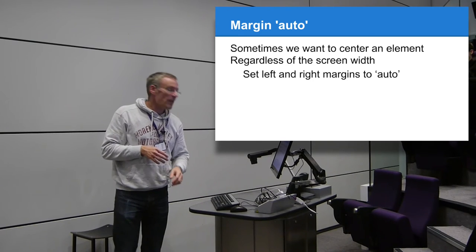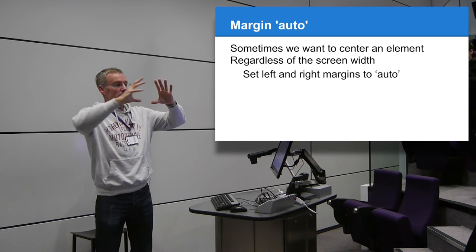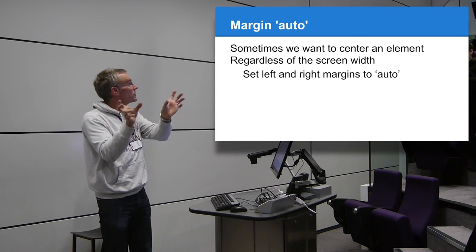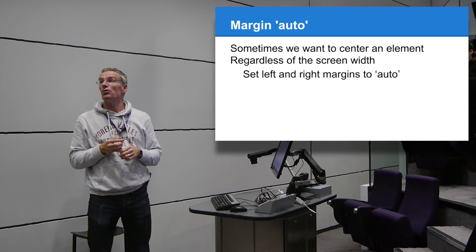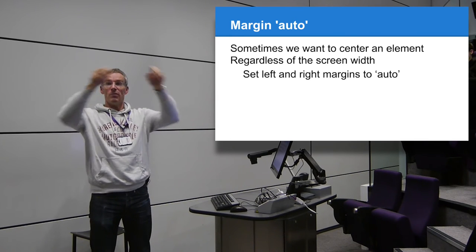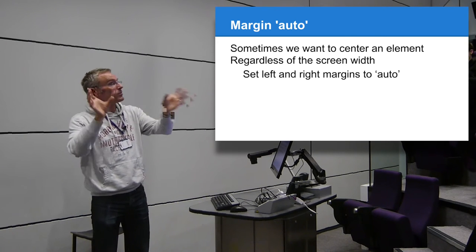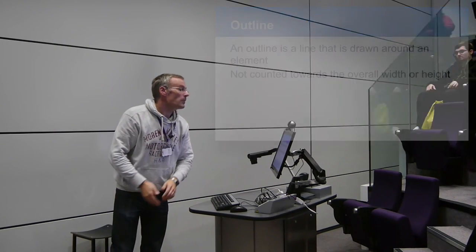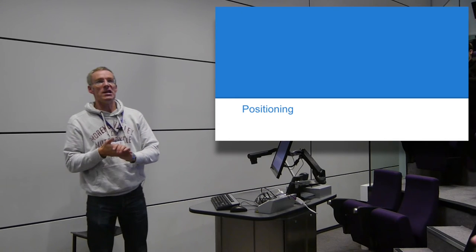If you want all your elements centered on screen, setting margin-left and margin-right to `auto` will automatically match them and keep the content centered regardless of how wide or narrow the browser becomes. Give it a width, set margin auto on the sides, and it automatically centers itself on screen.